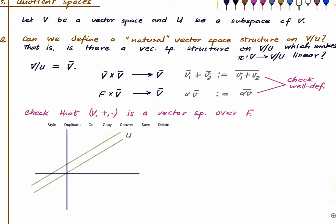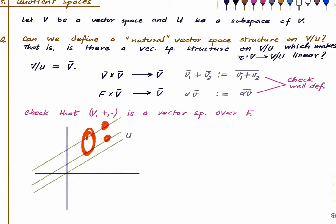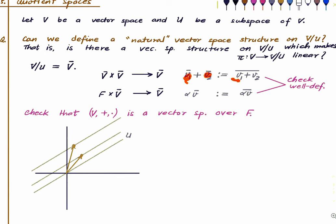Let's say this is a coset and this is another coset. We want to see how to add these two cosets — they are elements of the vector space V mod U, and we want to geometrically see what is the sum of these two. So pick two representatives: one from each coset. The recipe for addition is to add the representatives as you would in the parent space, and then take the corresponding coset.